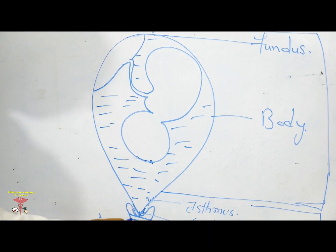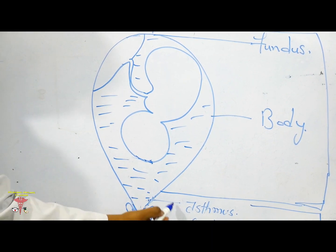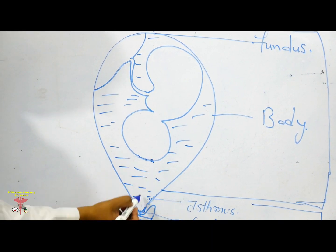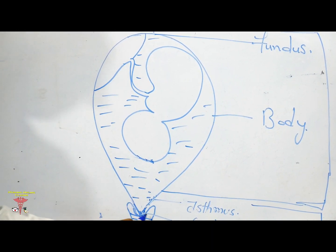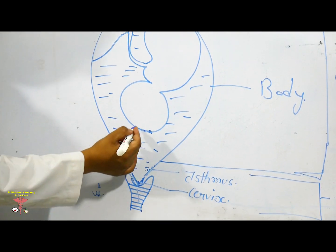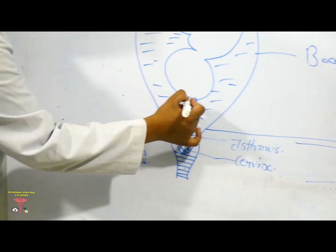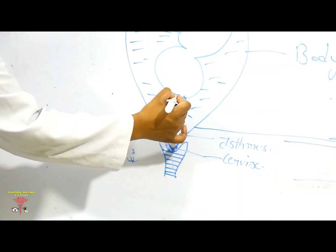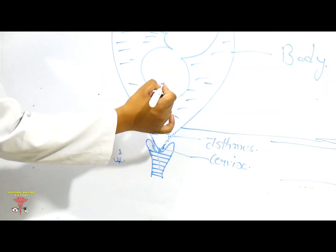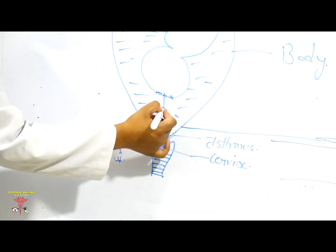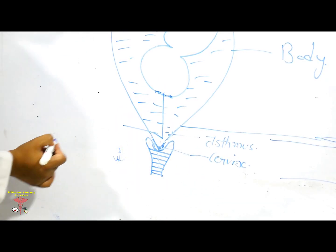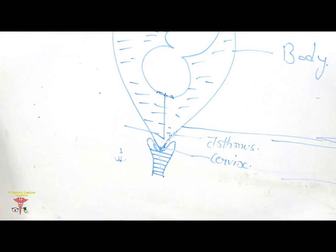As the cervical channel gradually opens, the fetal head comes down, and this process is known as the descent of the fetal head.